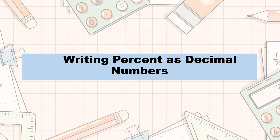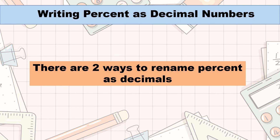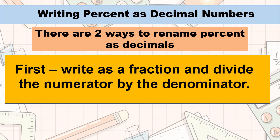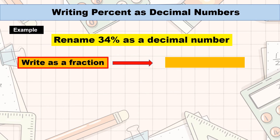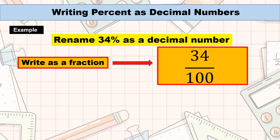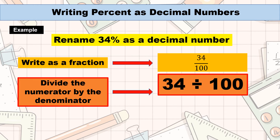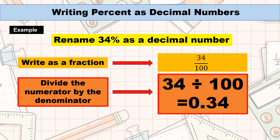Now we are going to express percent as decimal numbers. There are two ways to convert percent to decimals. First, write as a fraction and divide the numerator by the denominator. For example, rename 34% as a decimal number. First, let's write 34% as a fraction: 34 over 100, or 34 hundredths. What would be the result if we divide 34 by 100? If your answer is 0.34, or 34 hundredths, you are correct.